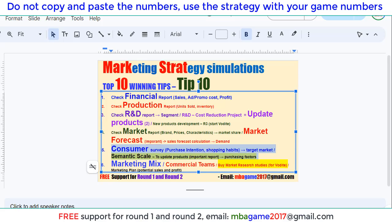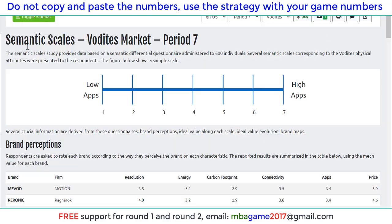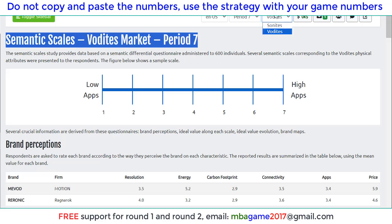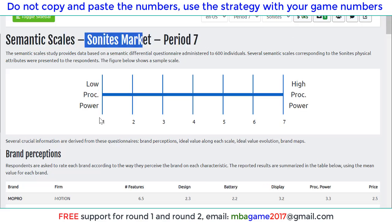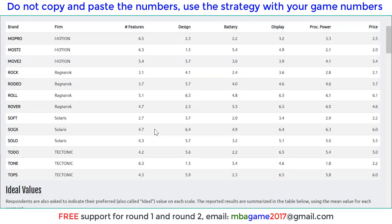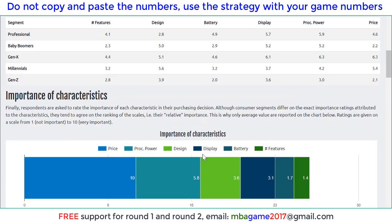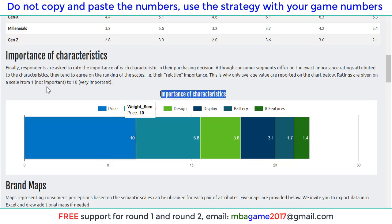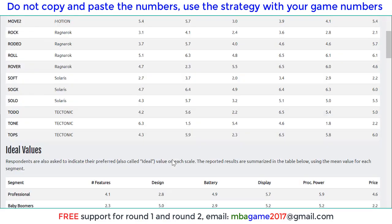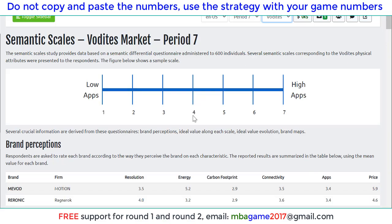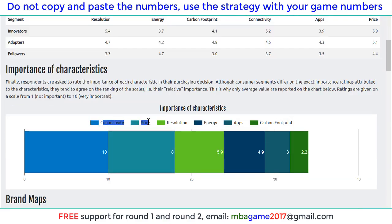Now we can check the semantic scale report. You can see the semantic scale for the Dime market and also for the Sol9 market here. We see the scale from 1 to 7 in the market research, and we can see the specification for customer expectation and customer perception for each product. For the Sol9 market, price and processing power are the most important characteristics. For the Bodice market, connectivity and price are most important.